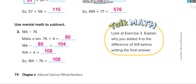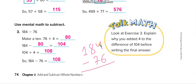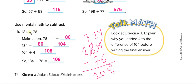You can also do 184 minus 76 directly. 4 minus 6 is not possible, so take 1 from 8: the 8 becomes 7, and the 4 becomes 14. Then 14 minus 6 is 8, 7 minus 7 is 0, and 1 minus nothing is 1. Answer: 108. Both methods give the same answer. I hope you understand the mental method.